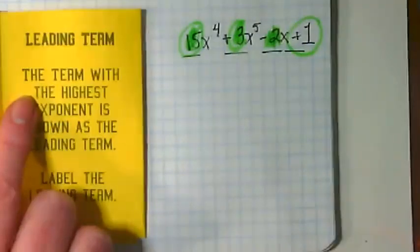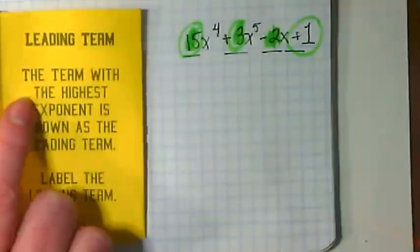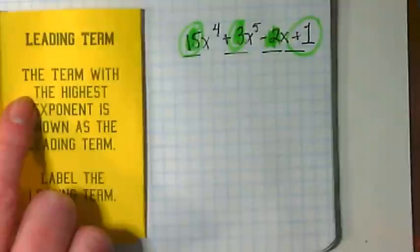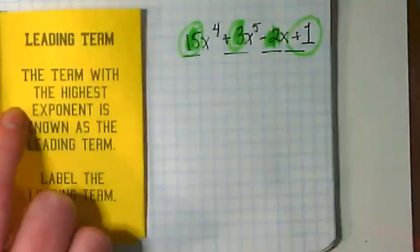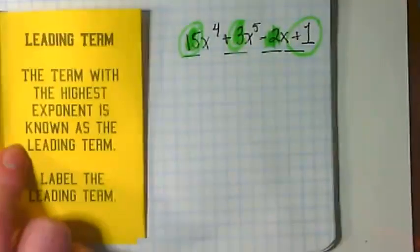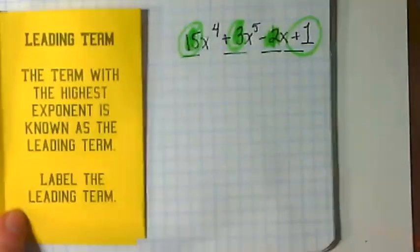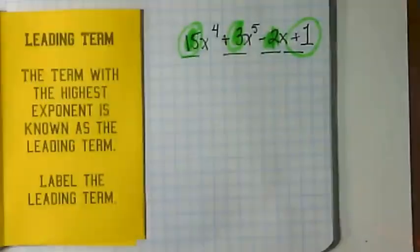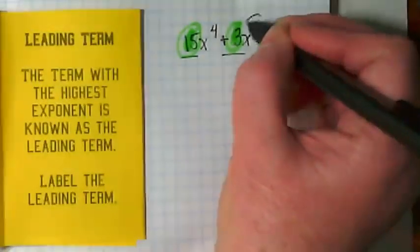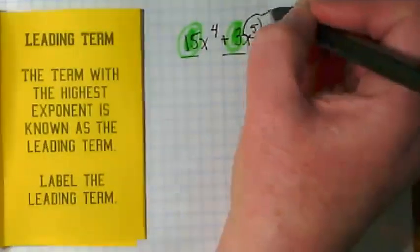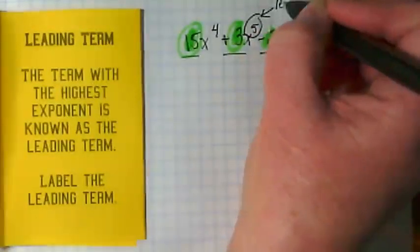Next, we have what's called the leading term. We talked about this a little bit yesterday with our Desmos. The term with the highest exponent is known as the leading term. Label the leading term. We're going to circle this and label it leading term.